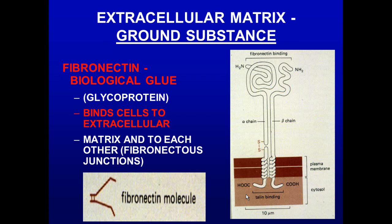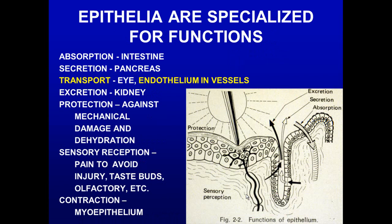Fibronectin is the histologic glue, and there are receptors on epithelial cells that bind to it. You can use that as a means to produce polarized cells, and then test a treatment applied on one side or the other side.